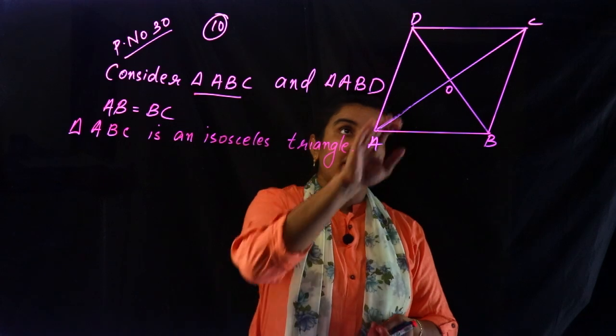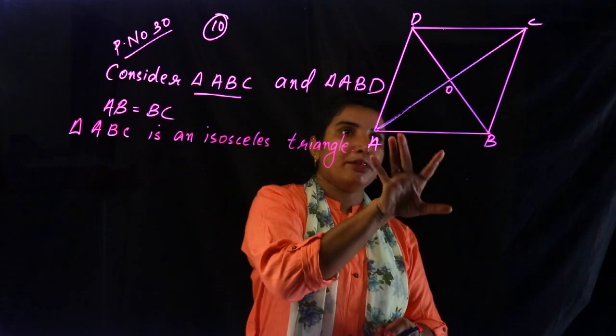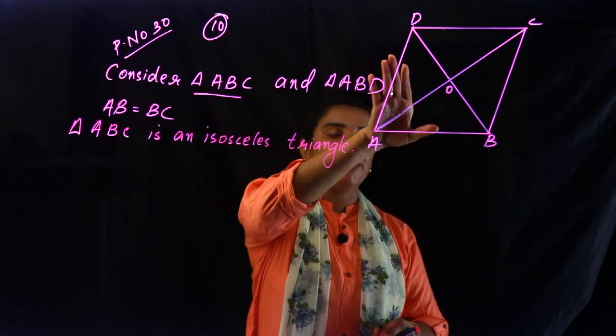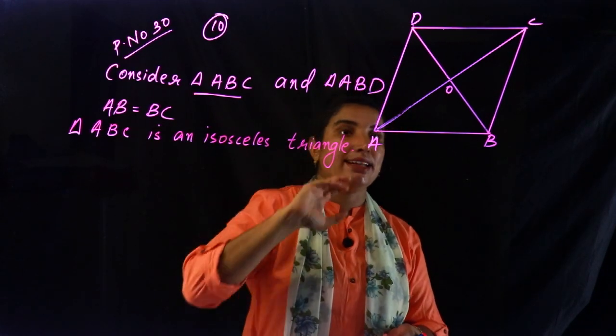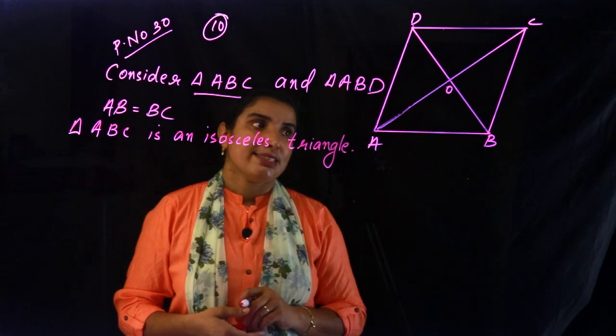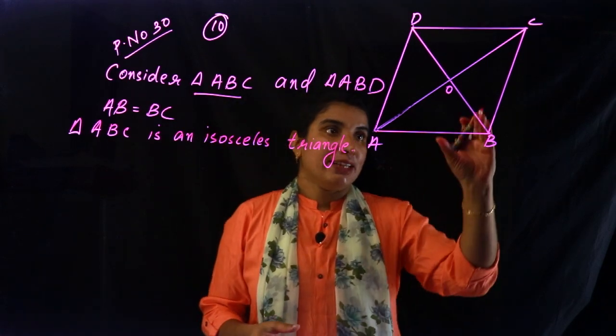Triangle ABD is also a triangle where AB and AD are equal, so triangle ABD is an isosceles triangle.